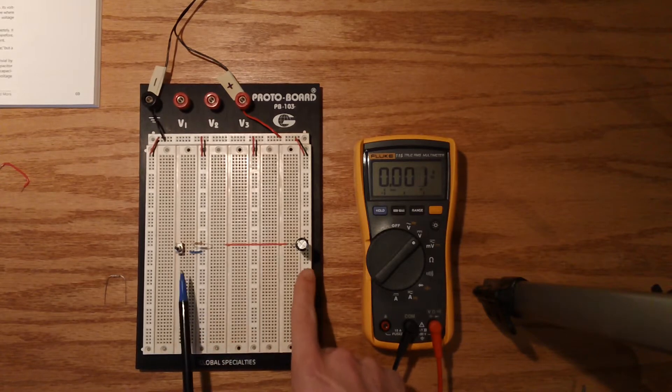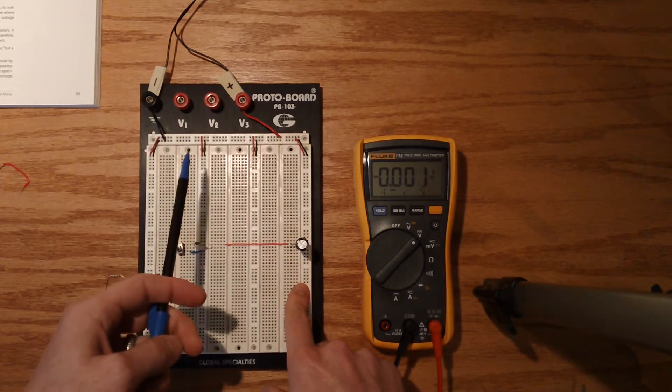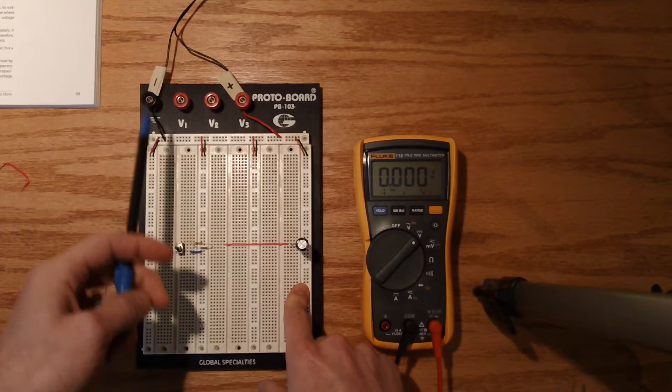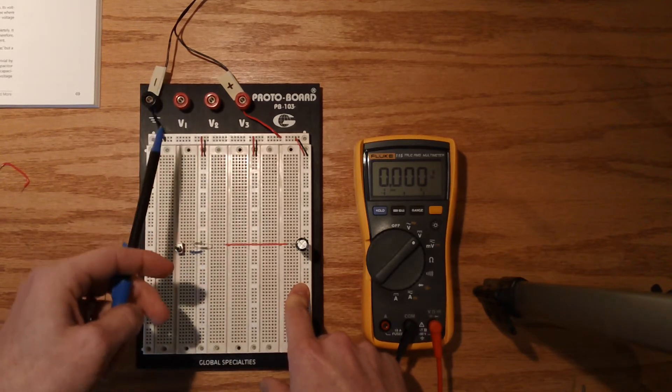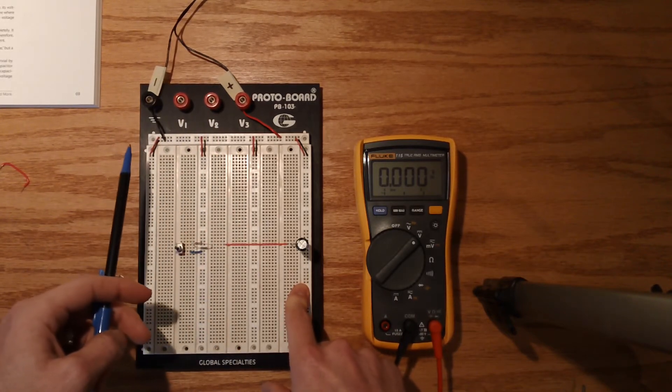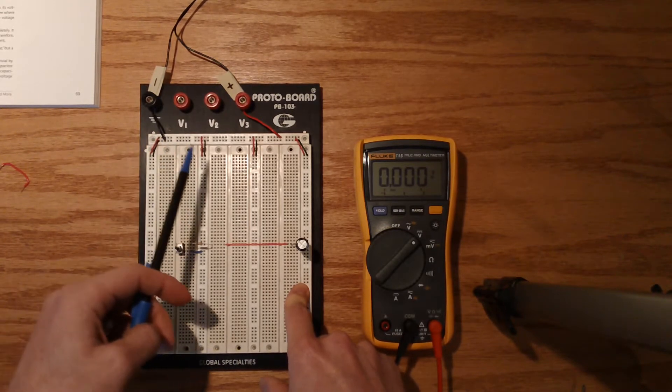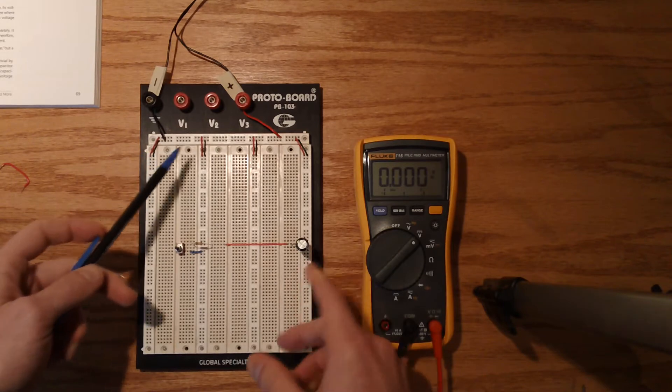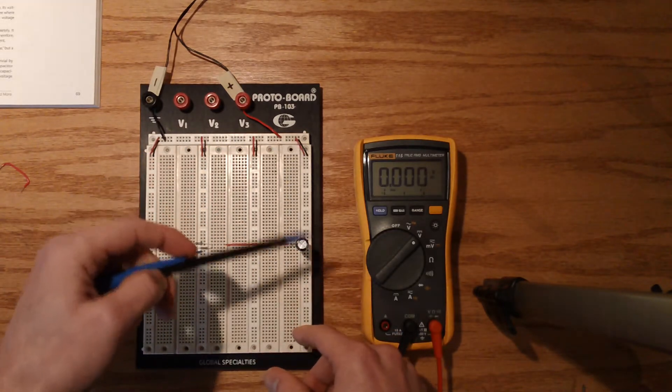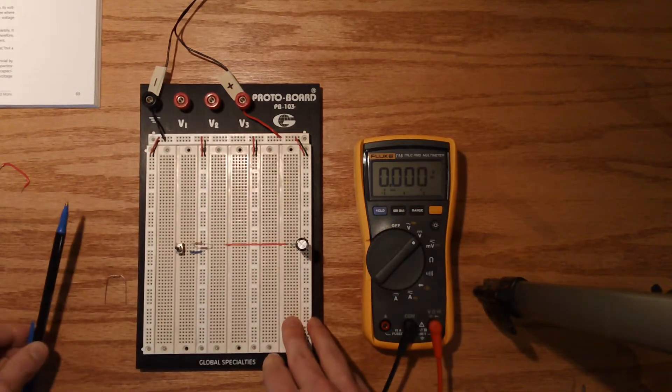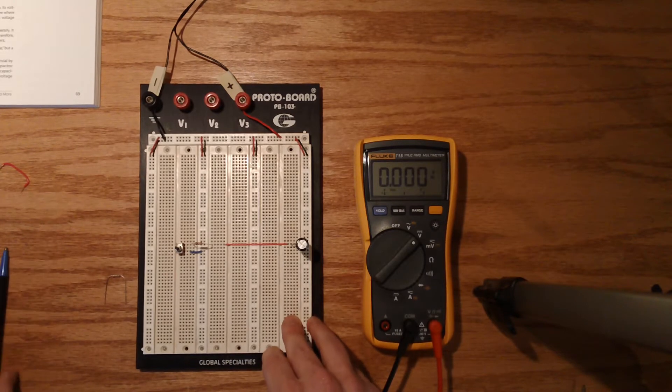So in this setup we have our 12 volt AC adapter, assuming it doesn't explode on us, that will be powering current through the circuit.